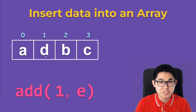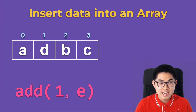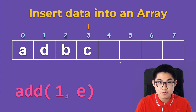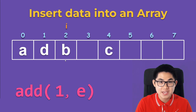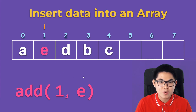Let's insert E at index one. The first step: check for space — there are four letters and four squares, so there's not enough space. We double the length of the array. Then we put the iterator at the last letter, move C right, then B right, then D right. Now we're at index one and we insert E. We now have A, E, D, B, C.